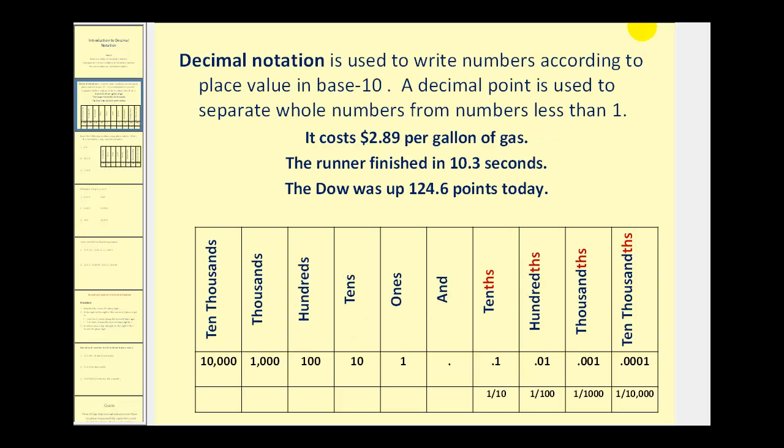Decimal notation is used to write numbers according to a place value in base 10. A decimal point is used to separate whole numbers from numbers that are less than one. And we see decimals all the time in our real life. For example, if it costs $2.89 per gallon of gas, the two represents two whole dollars, and the 89 to the right of the decimal point represents 89 hundredths of one dollar.